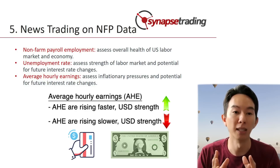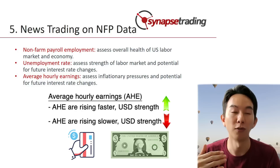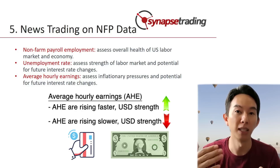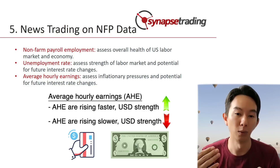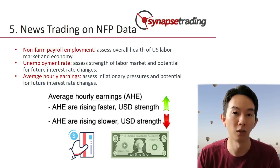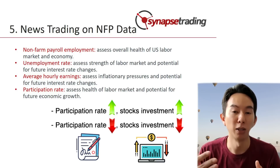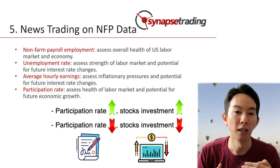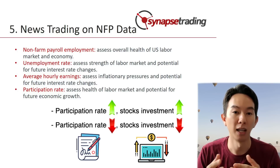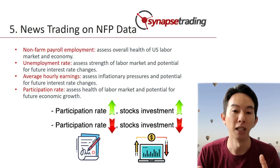Next is the average hourly earnings. Traders might use this data to assess inflationary pressure and the potential for future rate changes. For example, if average hourly earnings are rising faster than expected, traders might expect the Fed to increase interest rates, which will then lead to a stronger US dollar and in turn weaker stocks. Next is the participation rate. Traders might use the participation rate to assess the health of the labor market and the potential for future economic growth. If the participation rate is falling, traders might see this as a sign of a weak labor market and decrease their investment in risky assets. On the other hand, if the participation rate is increasing, traders might see this as a sign of a strong labor market and increase their investment in risk assets.